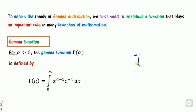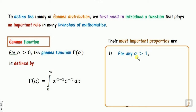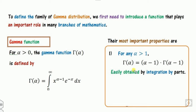So if we call this gamma of n, look at that — this is alpha minus 1, so alpha here corresponds to the exponent plus 1. For example, if it is 2 then it corresponds to 3, and so on. Based on this function, the first property: for any alpha greater than 1, gamma of alpha equals alpha minus 1 times gamma of alpha minus 1, which you can obtain by integrating by parts.